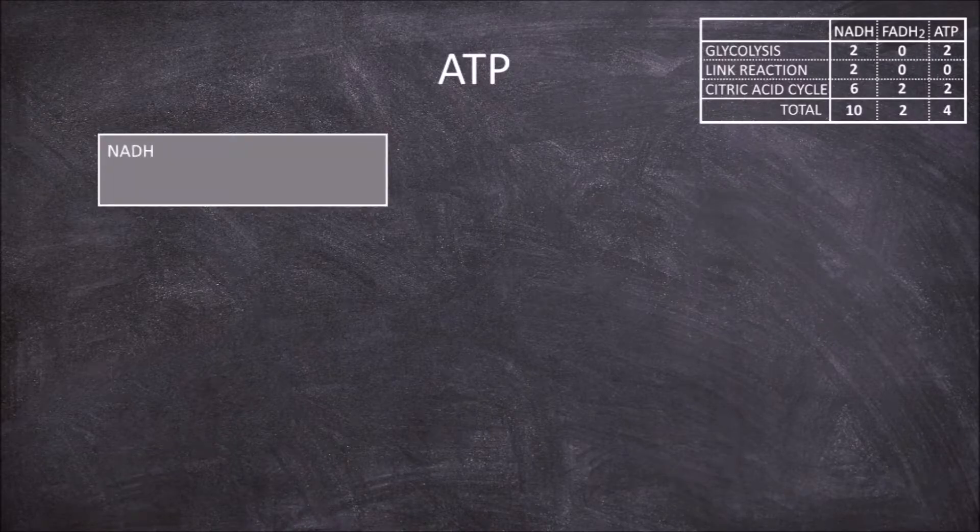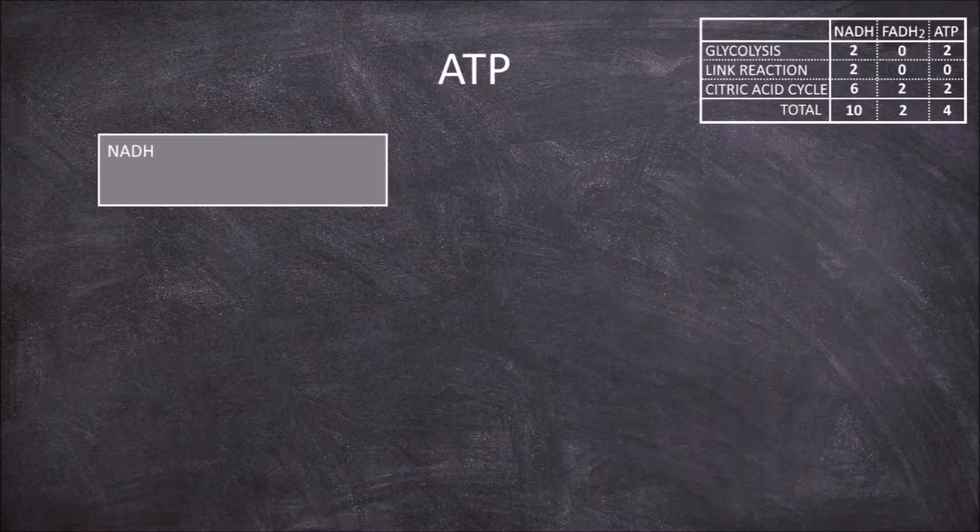For each NADH that goes into the electron transport chain passing on its 2 electrons, 4 hydrogen are pumped through at complex 3 and 2 in complex 4, giving a total of 10 hydrogen protons pumped for each NADH molecule.